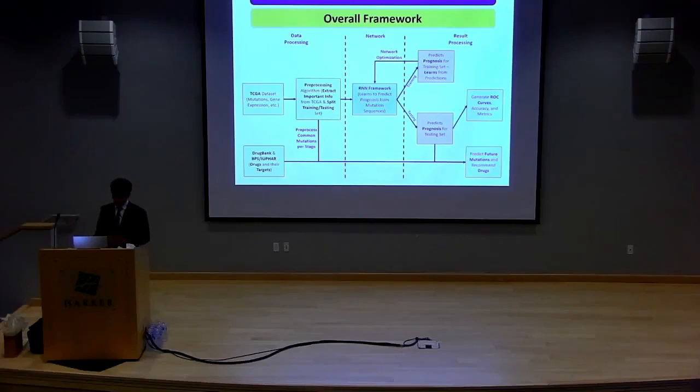And finally, in the result processing, I did three things. I predicted the prognosis, i.e. the cancer stage from the training set, and I tested it on the testing set. I probabilistically determined which mutations might happen next in a given patient's cancer. And third, developed a database pipeline for taking those mutations that I predicted and seeing if we can preemptively treat them with existing treatments.